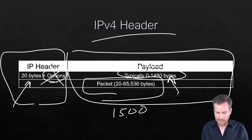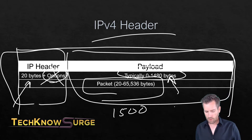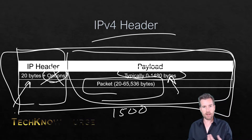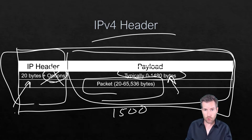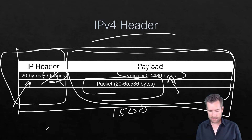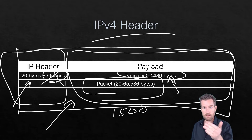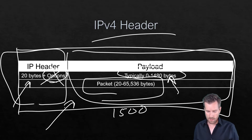One thing to note is the difference between a frame and a packet. A frame is generally associated with layer 2, while a packet is the layer 3 unit — and the packet remains mostly consistent throughout the process of transmitting data.